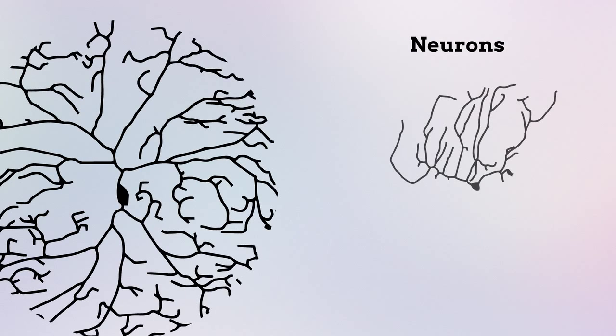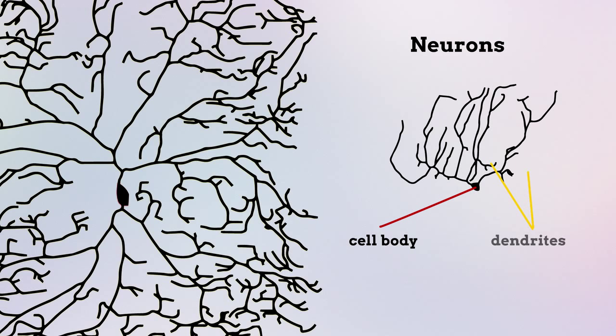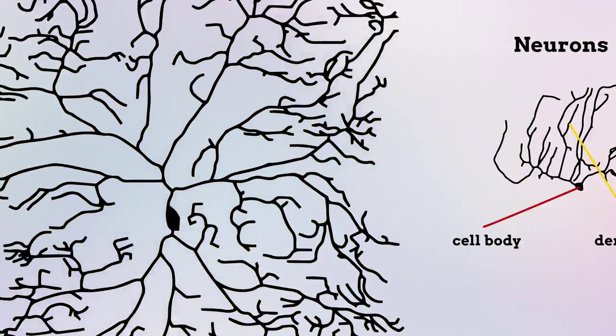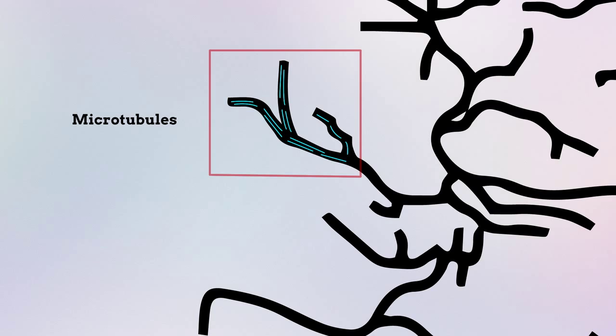During brain development, neurons form a unique tree-like pattern of dendrites that fits their specific function. New dendritic branches are stabilized by microtubules, which establish the internal structure of cells.